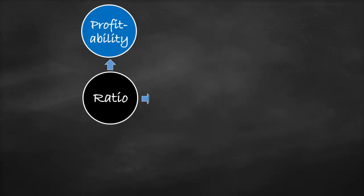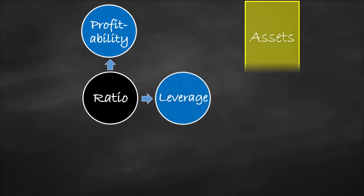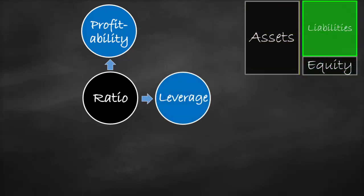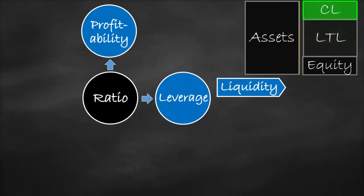The second category is the leverage ratios, which measure the ability of a company to meet its liabilities. We can divide the leverage ratios into two categories. The liquidity ratios measure the ability of a company to pay its short-term obligations, represented by current liabilities.